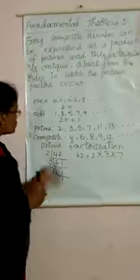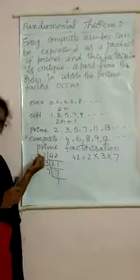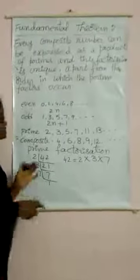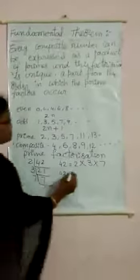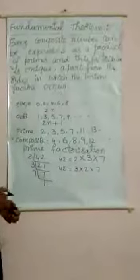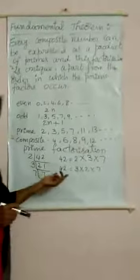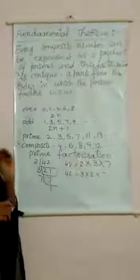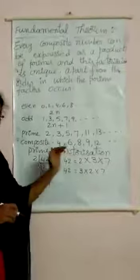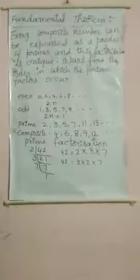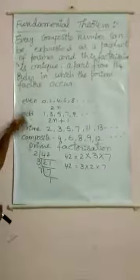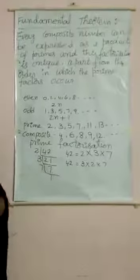Someone might start dividing with 2, another might start with 3, so you could also write 42 = 3 × 2 × 7, or 42 = 7 × 3 × 2. Whatever may be the order, the prime factorization is unique. 42 is also an even number and a composite number.